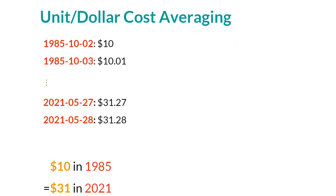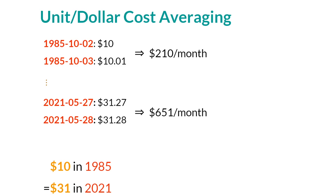In 1985, the monthly investment had been $210 per month. In 2021, it would be $651 per month.